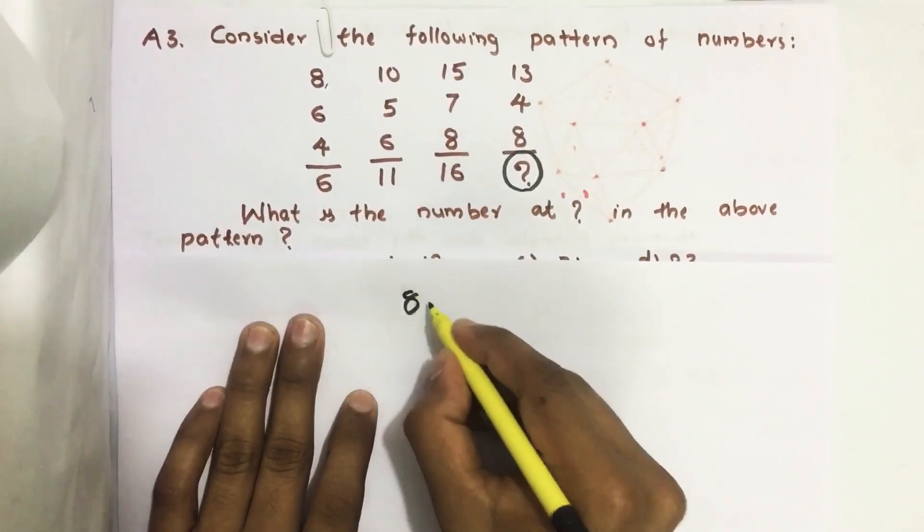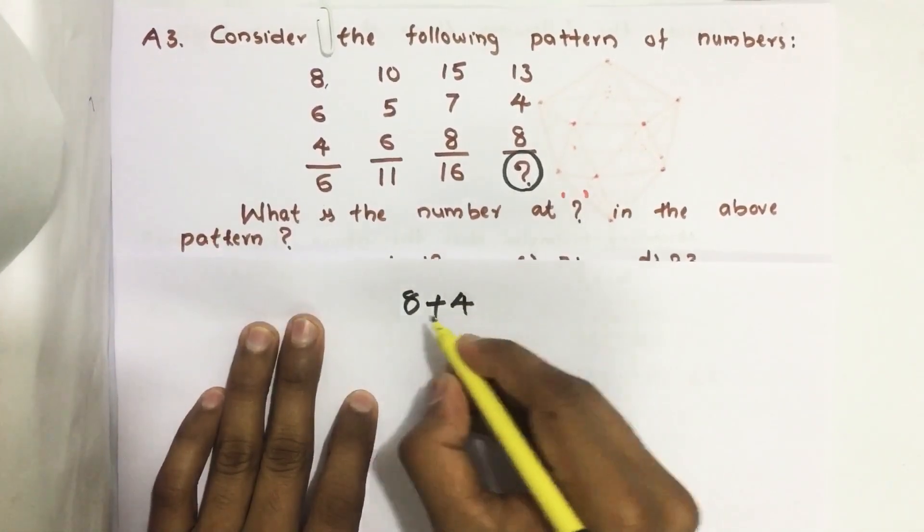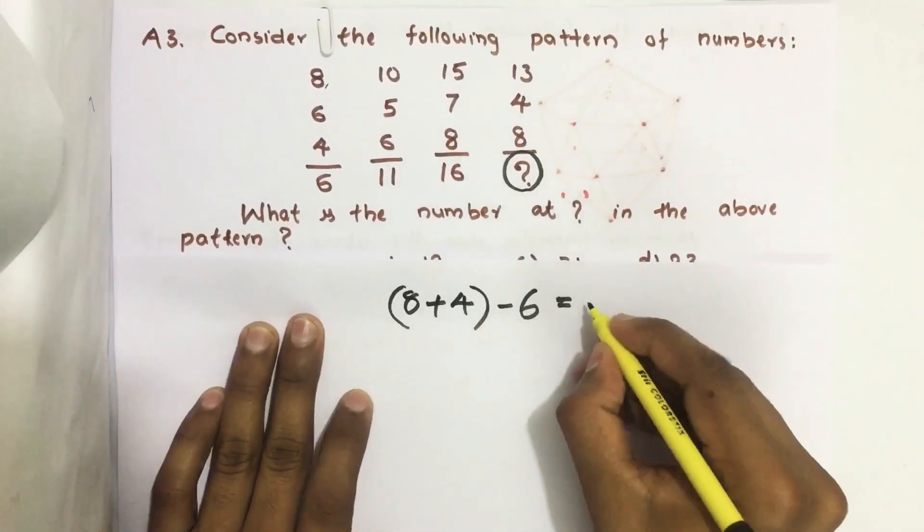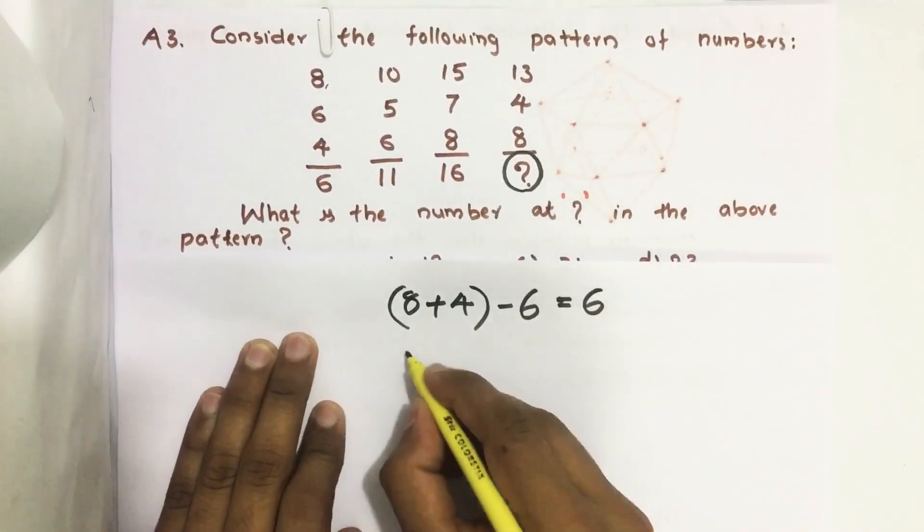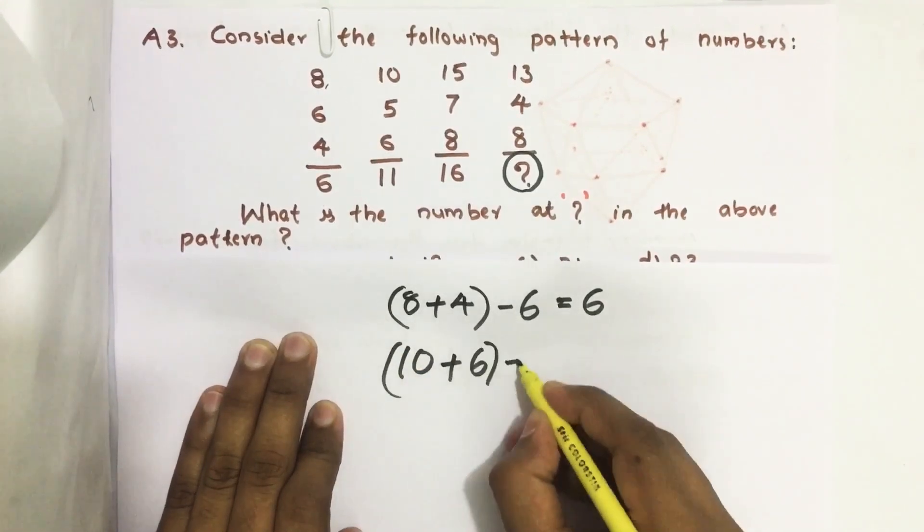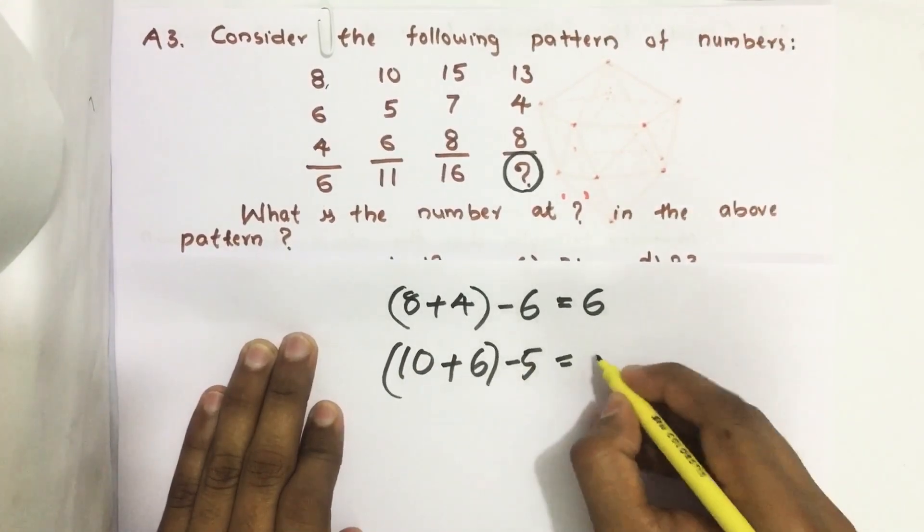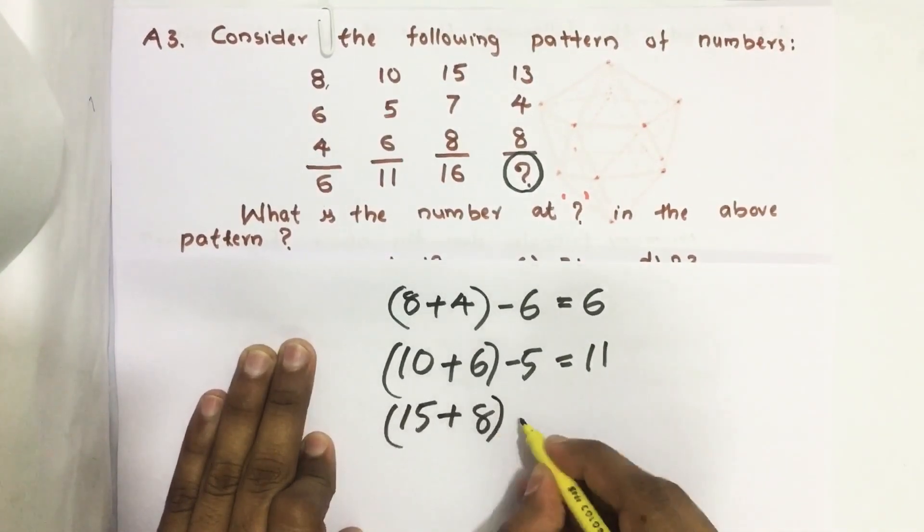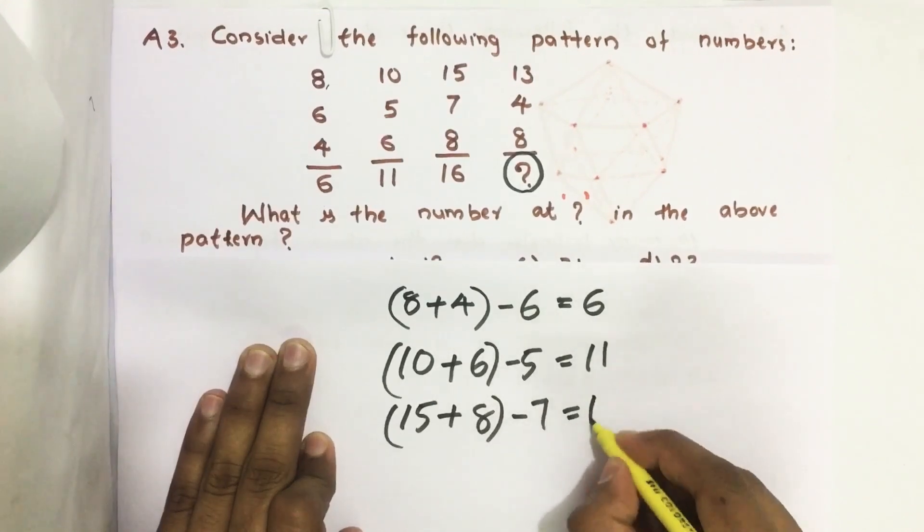So, 8 plus 4 minus 6, we get 6. 10 plus 6 minus 5, we get 11. 15 plus 8 minus 7, we get 16.